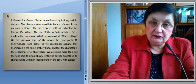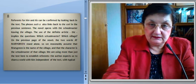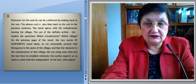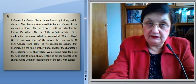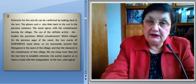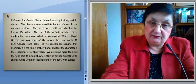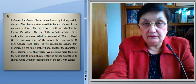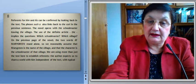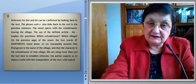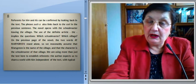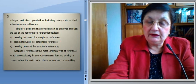The novel opens with the schoolmaster leaving the village. The use of the definite article implies the questions: Which schoolmaster? Which village? On the previous page of the novel, the two words 'At Marygreen' stand alone. So we reasonably assume that Marygreen is the name of the village and that the character is the schoolmaster of that village. We are using more than just the text here to establish reference. The author expects us to share the world with him, independent of the text, with typical villages and their population — including everybody, their schoolmasters, millers, etc.